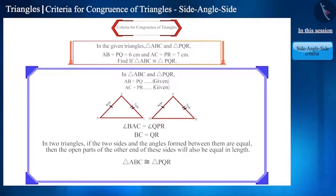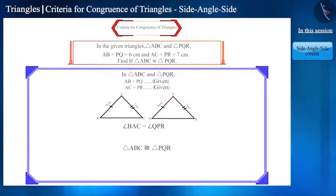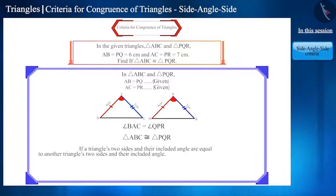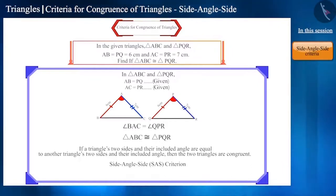And then we can say that these two triangles are congruent. That is, if a triangle's two sides and their included angle are equal to another triangle's two sides and their included angle, then the two triangles are congruent. This is called side-angle-side or SAS criterion.